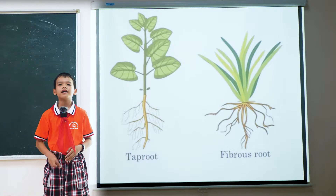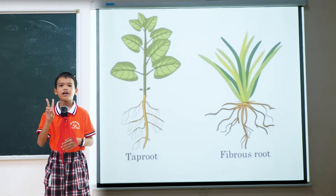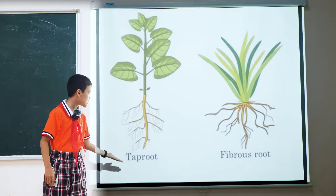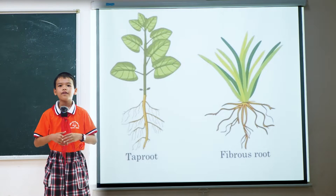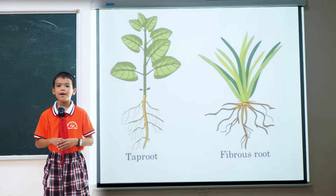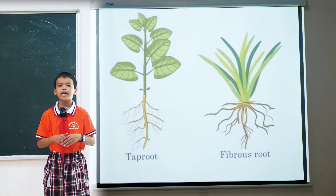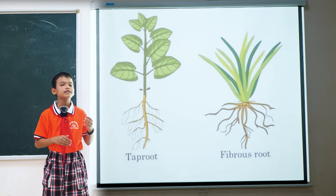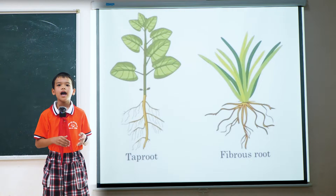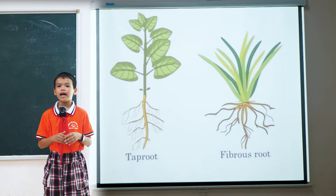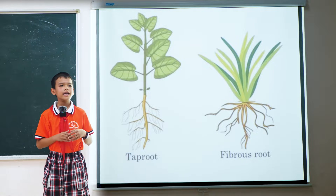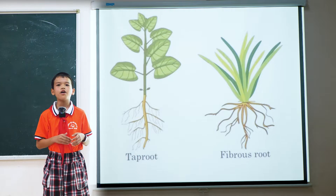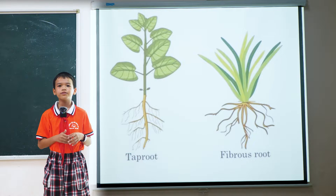There are two main kinds of roots: fibrous roots and tap roots. Fibrous roots have many acres, side roots, and coming out of it are very tiny roots. But the tap root has one main large root and it comes out very tiny roots.